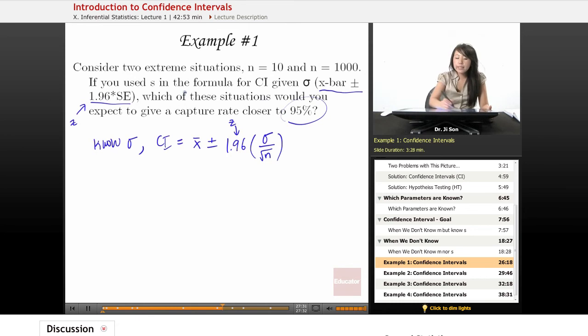But what it's asking you is, what if you substitute in S? So here, we don't know sigma. So here, we are going to just take this formula and use this z-value, S over square root of N.